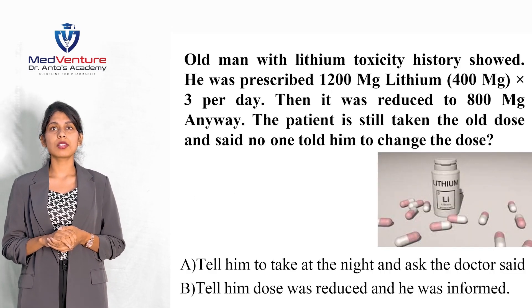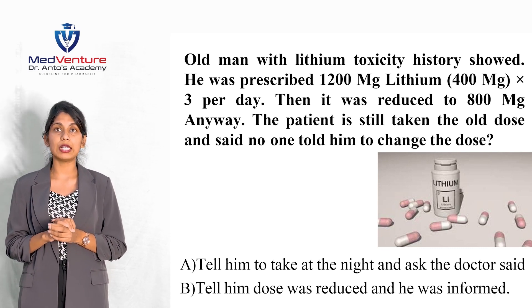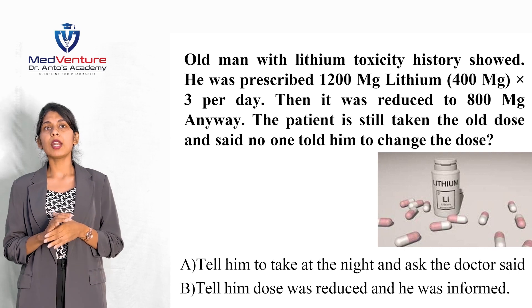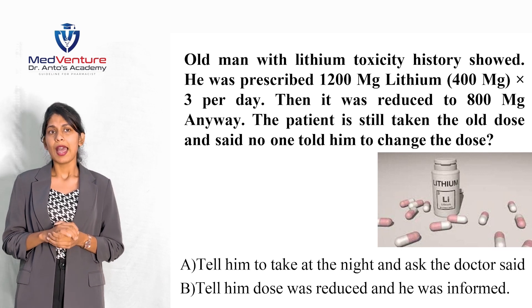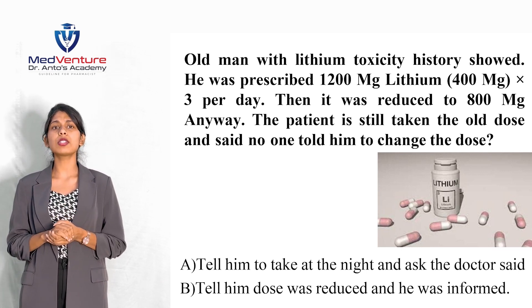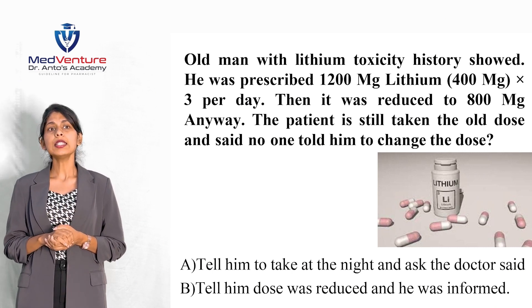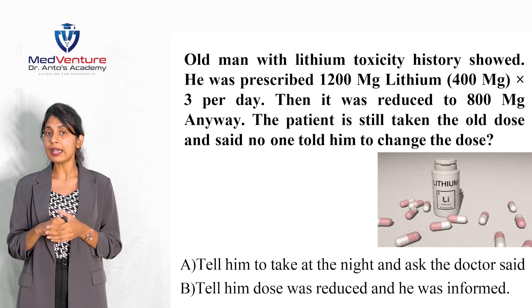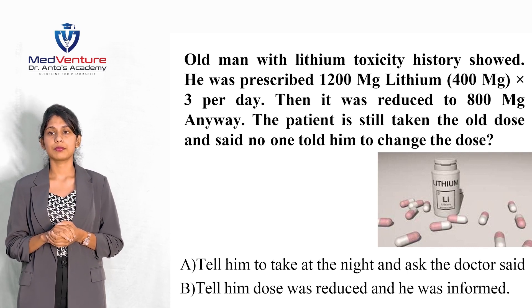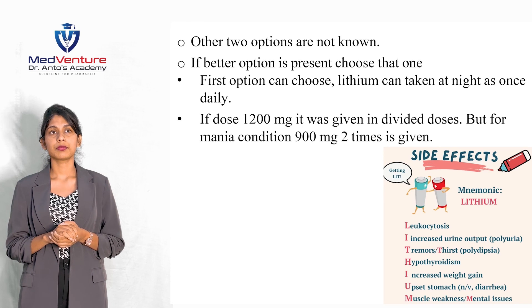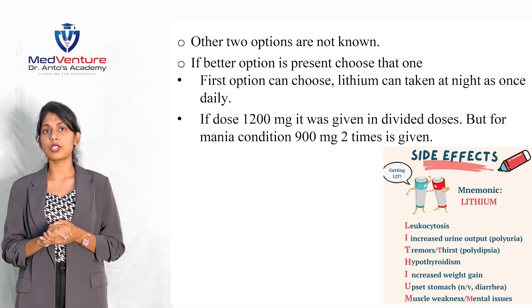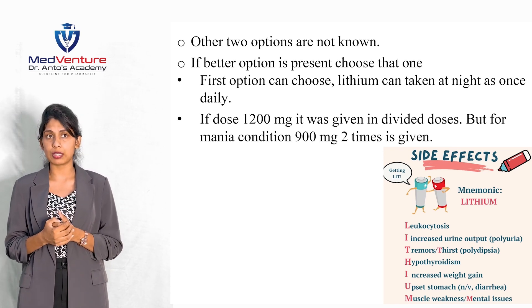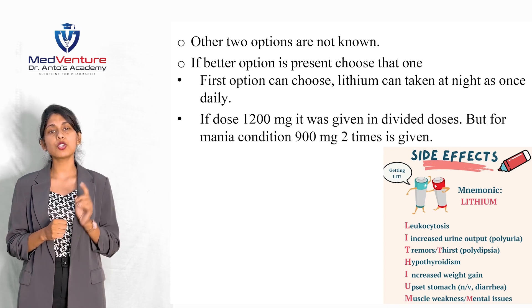Case: An old man with a history of lithium toxicity was prescribed 1200 mg lithium (400 mg three times per day). The dose was subsequently reduced to 800 mg per day, but the patient continued taking the old dose saying no one informed him of the change. The correct action is to inform him of the dose change and instruct him to take it as directed. The 800 mg dose should be given in divided doses — for example, 400 mg twice daily.